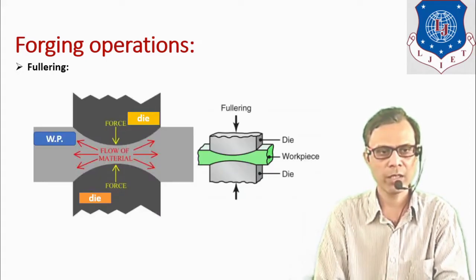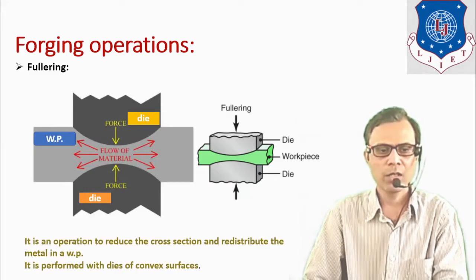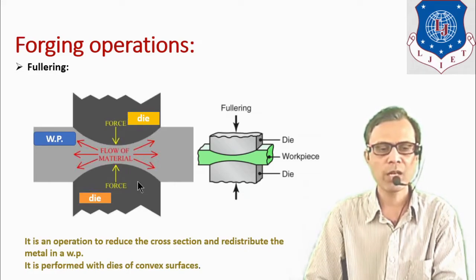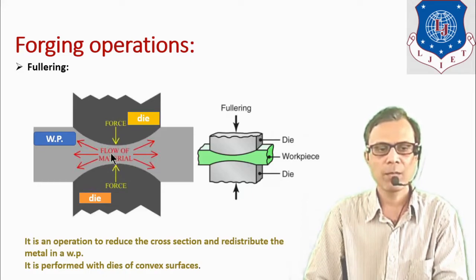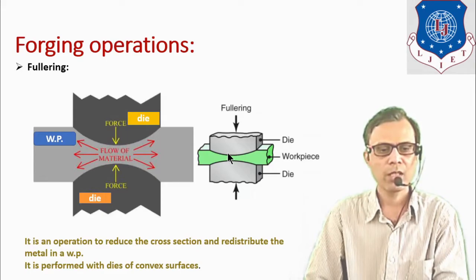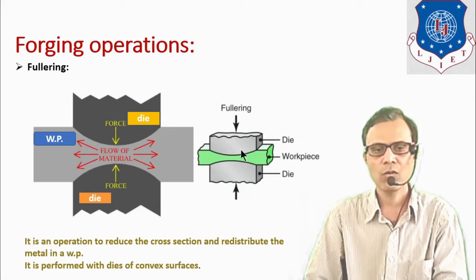The next operation is the fullering operation. It is an open die type operation used to reduce the cross section and to redistribute the metal in a workpiece. As seen in the diagram, when force is applied the material flows outward from the localized area. The dies used in this process have convex surfaces.